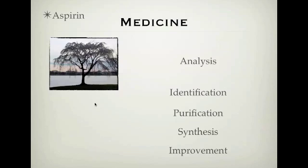The willow tree had compounds in it, and people in the olden days used to feel better after taking a tea or potion made from it. In terms of how we developed aspirin, we analysed the bark and leaves of the willow tree and tried to identify what compound was making us feel better. After identifying it, we purified it — getting it alone by itself without any other stuff from the bark or leaves — then worked out its structure and synthesised it ourselves.